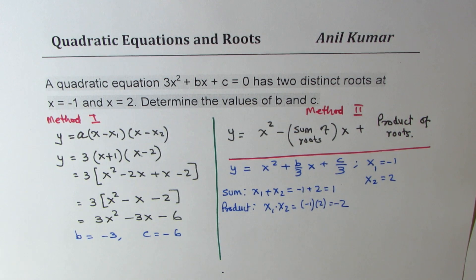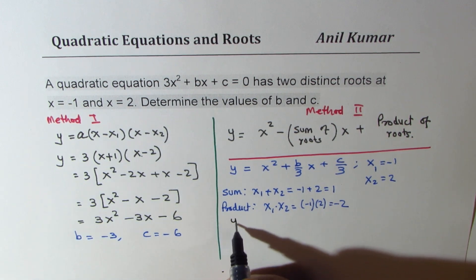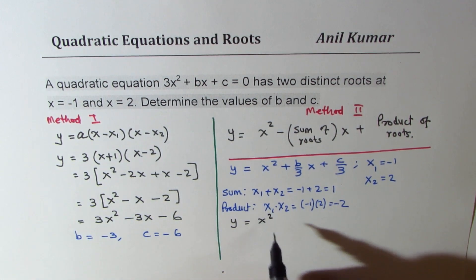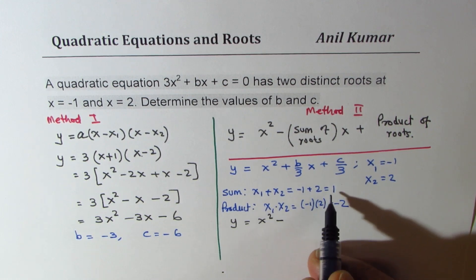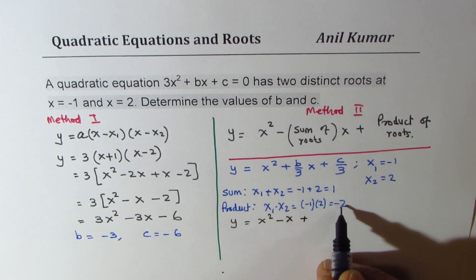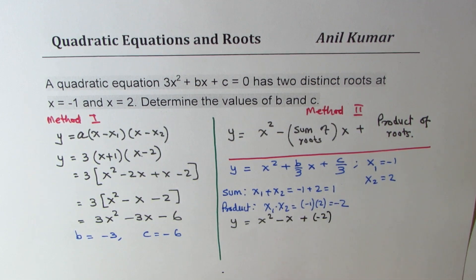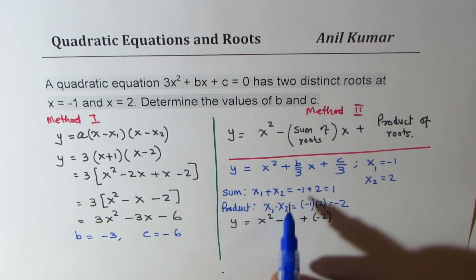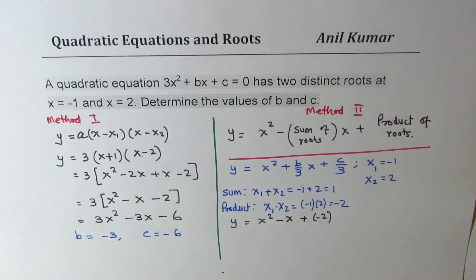So if you use this, you get your equation as y equals x squared minus sum, which is 1, so we get minus x plus product, which is minus 2. Now, from this equation, since that is your equation, and you know by comparison, you just compare.